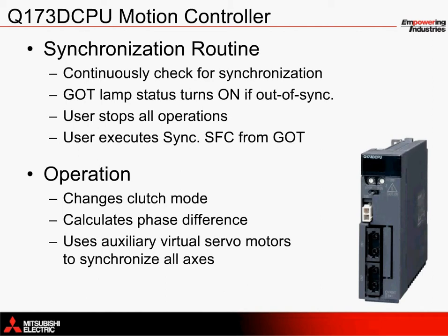At that point, the user can choose to stop all operations and then bring the system back into alignment. Each servo axis moves forward to correct its position relative to the encoder. When the synchronization routine is called by the user, all clutches change to direct mode clutches.